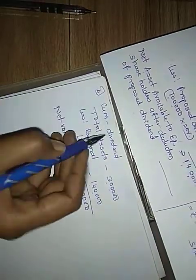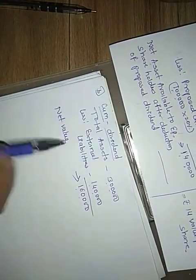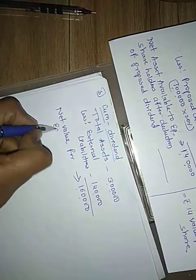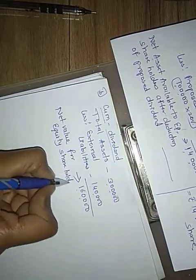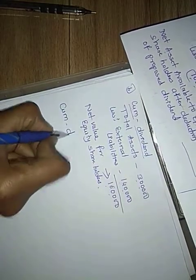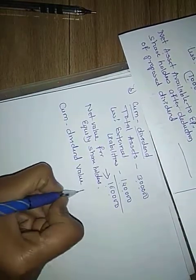In cum-dividend, we do not deduct the proposed dividend because cum-dividend includes the dividend value. Unlike x-dividend where proposed dividend is deducted, in cumulative dividend the proposed dividend is included. So one lakh sixty thousand is the net value for equity shareholders.